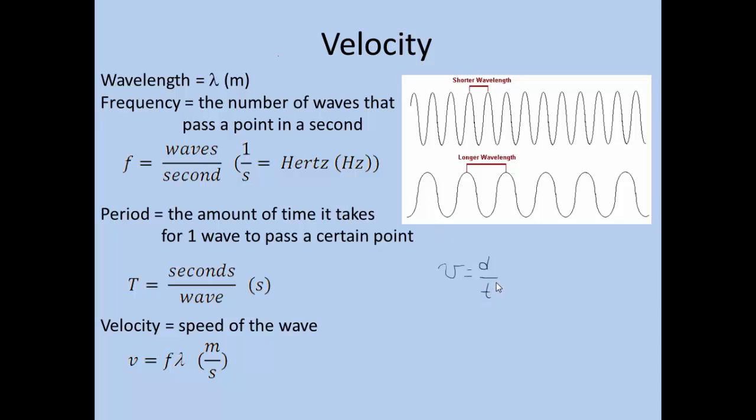When we are looking at time, what we call it for a wave is a period. The period is the amount of time it takes for one wave to pass a certain point. So if I was standing here and I'm watching this wave go by, I can time how long it takes for the crest to crest to move past me. And that would give me the period.